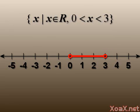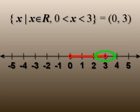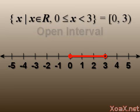Alternatively, we can eliminate the endpoints from the interval. In this case we use parentheses in the interval notation to indicate that the endpoints are excluded. In the graph we use empty circles to indicate that the endpoints are excluded. When we exclude both of the endpoints like this, the interval is called an open interval.